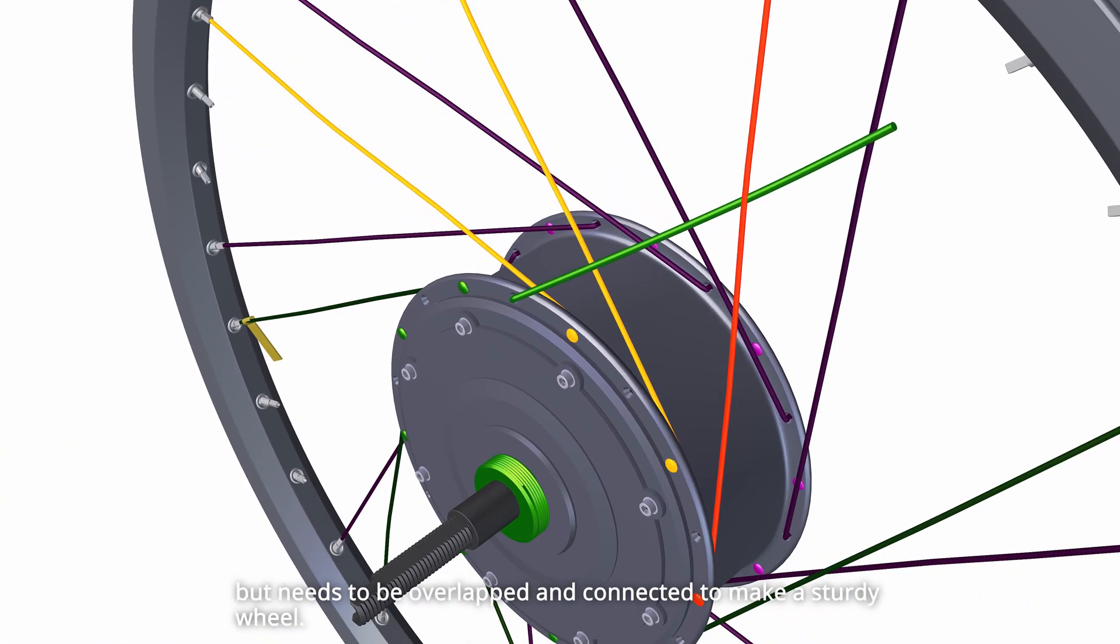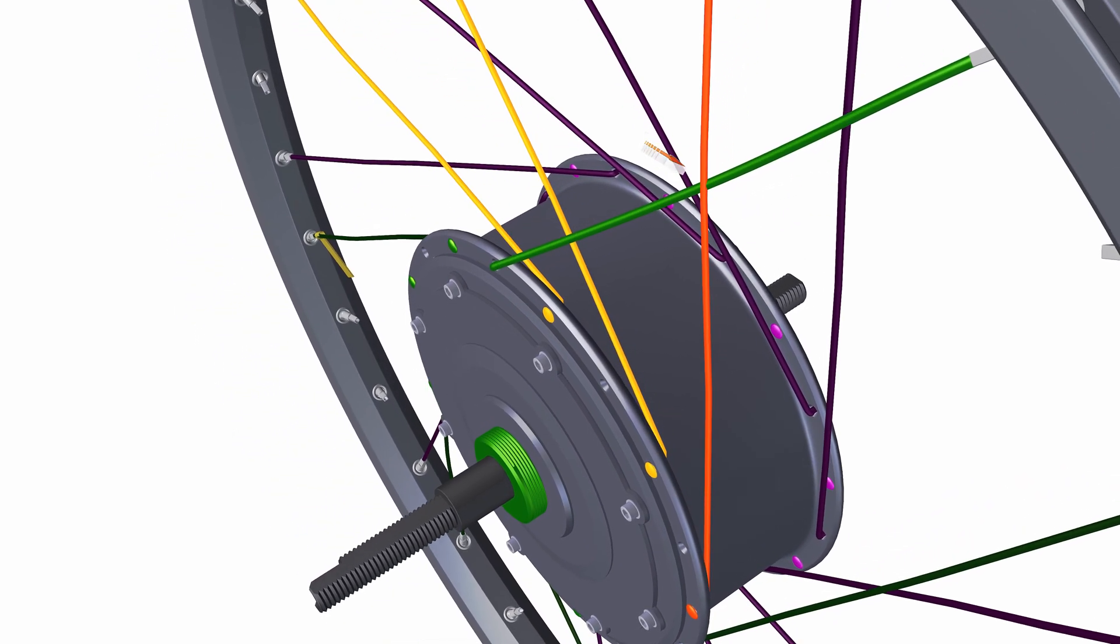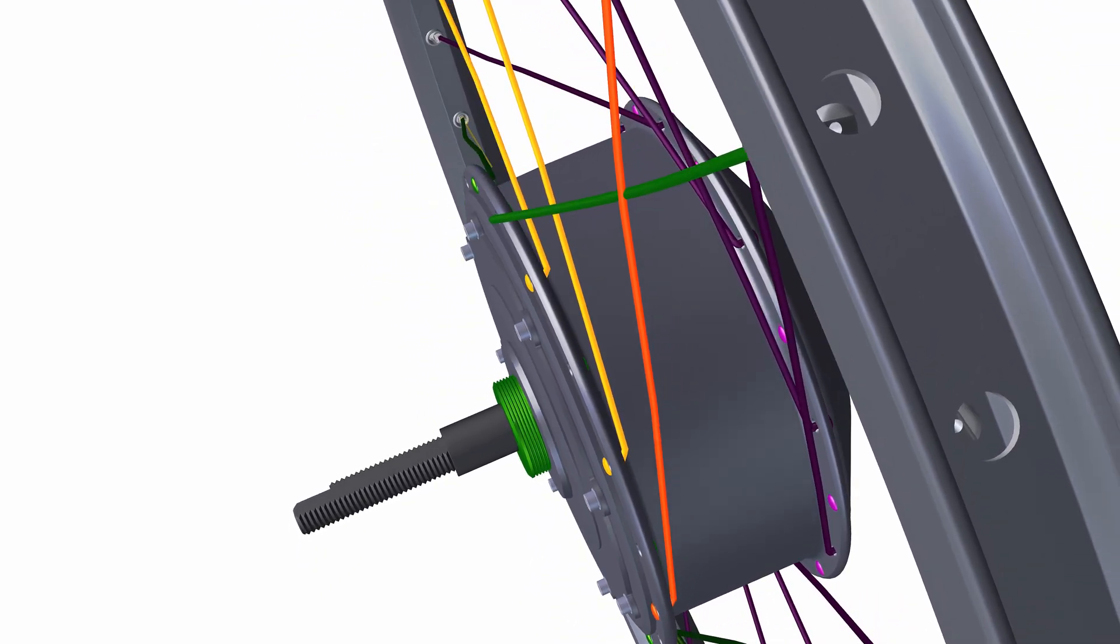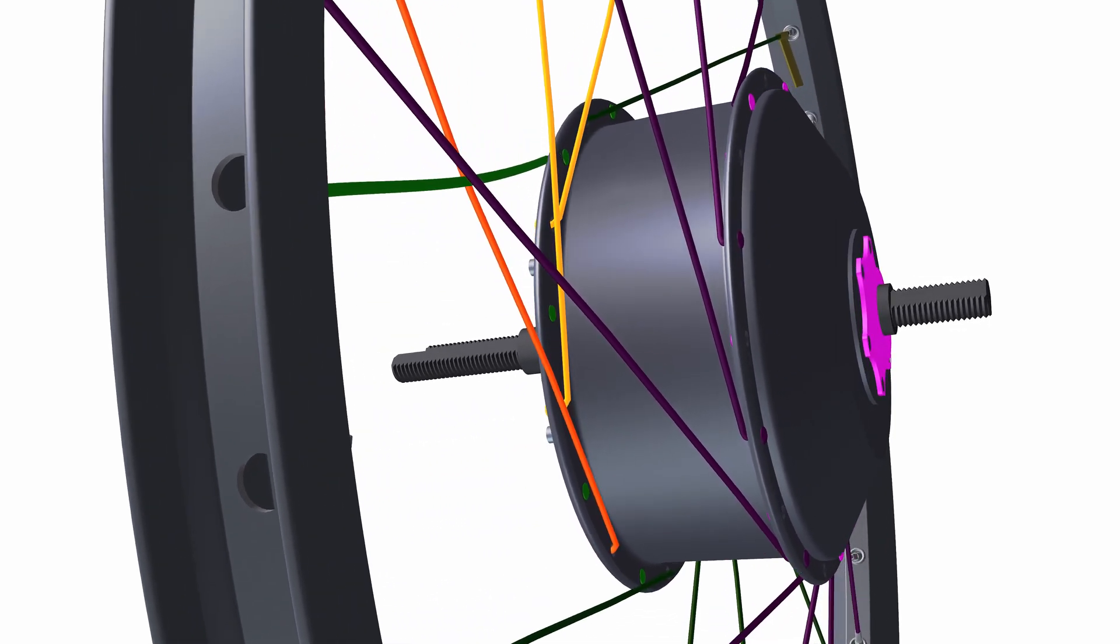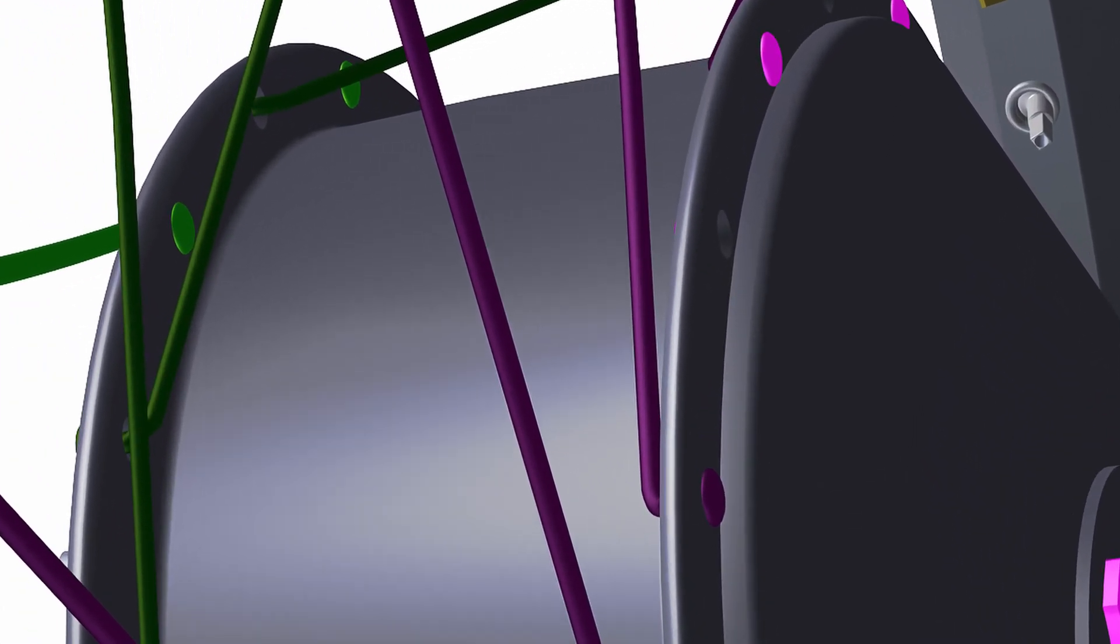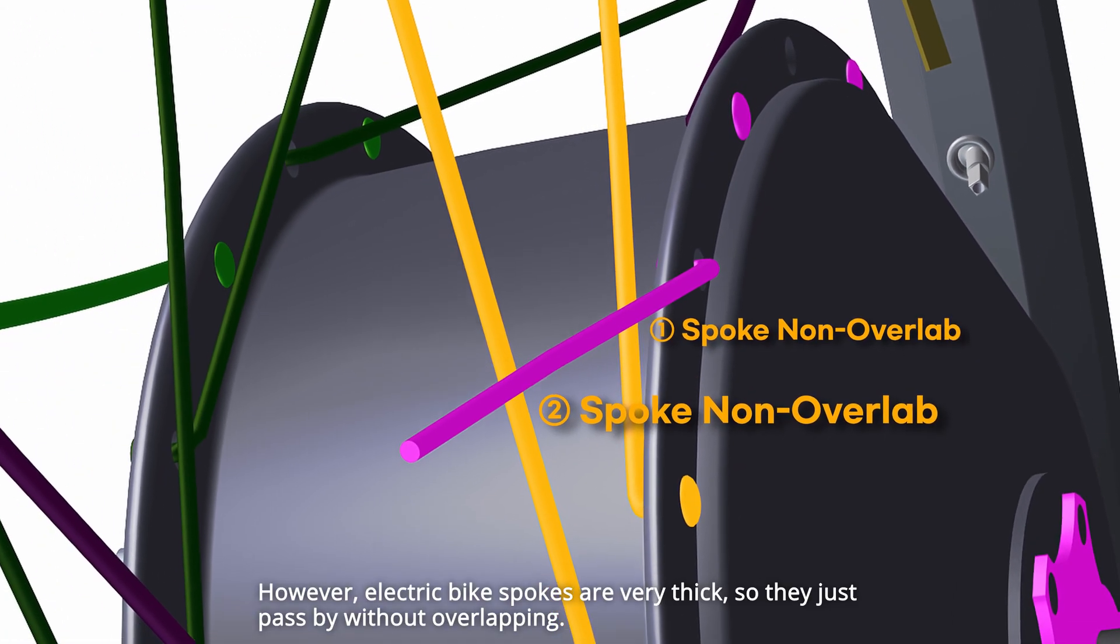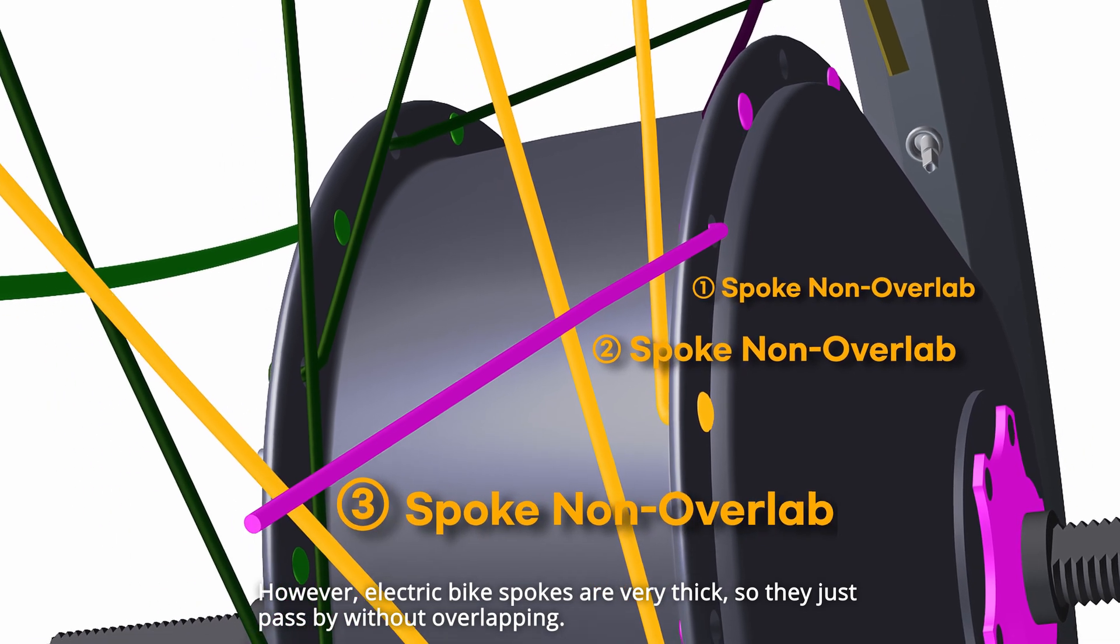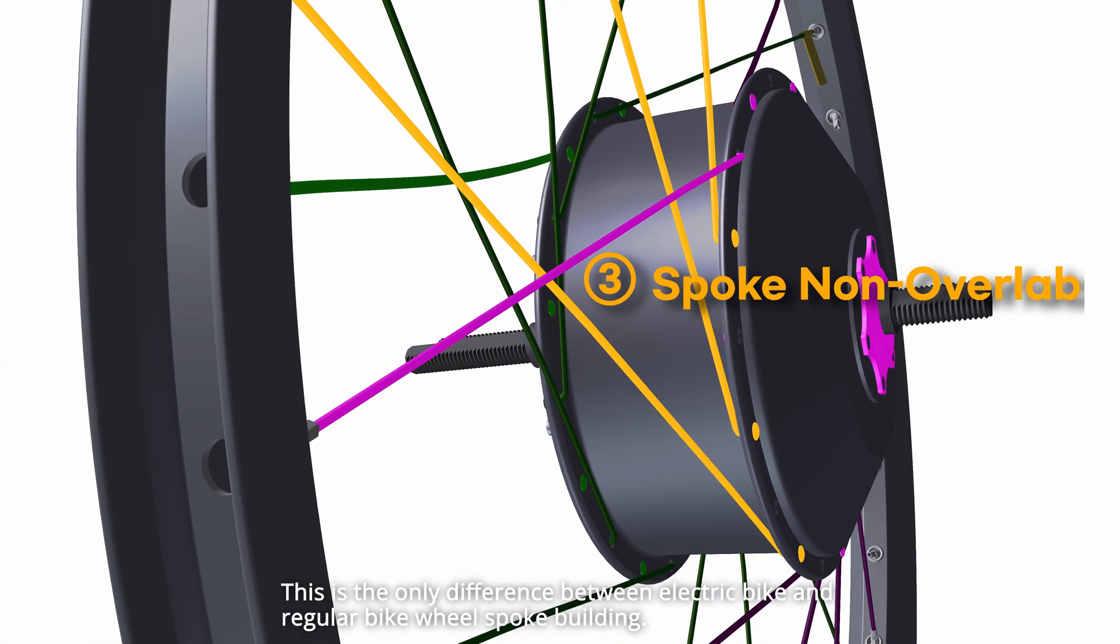But needs to be overlapped and connected to make a sturdy wheel. However, electric bike spokes are very thick, so they just pass by without overlapping. This is the only difference between electric bike and regular bike wheel spoke building.